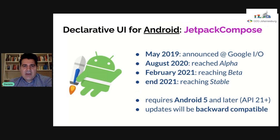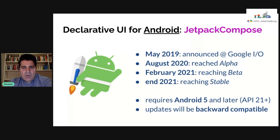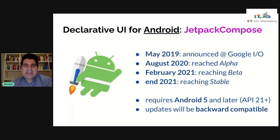More detail about Jetpack Compose for Android: it was announced in May 2019 at Google I/O, reached alpha last year in August, and last week reached beta. We know for sure, because the Compose team said so, that it's going to reach version 1.0 during this year. They don't know exactly when — it might be August, it might be November — but they promise it'll be by the end of the year.